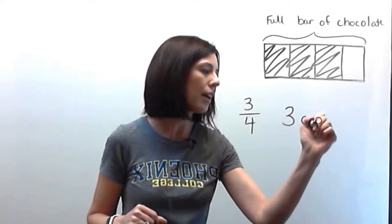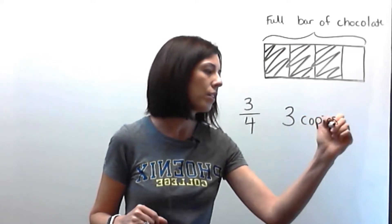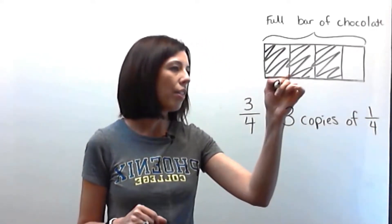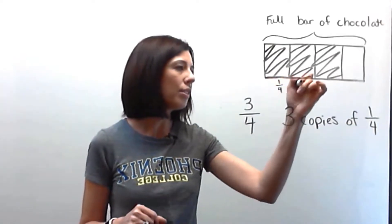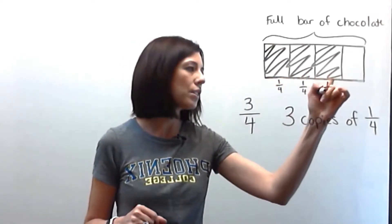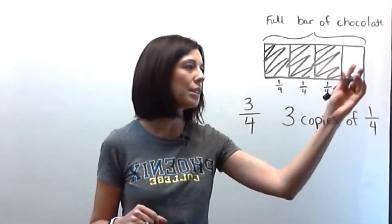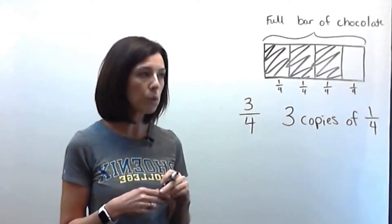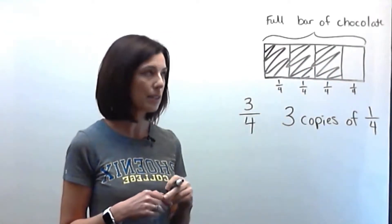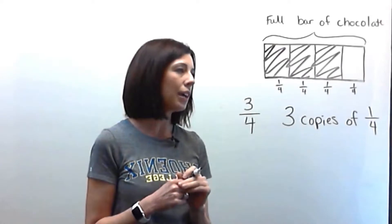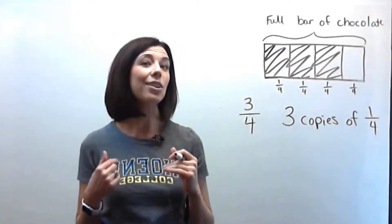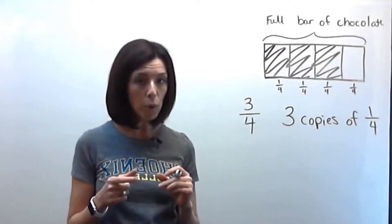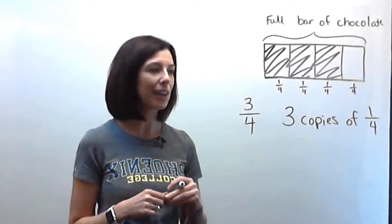that's three copies of one-fourth. So basically, this is a fourth, this is a fourth, this is a fourth, and this is a fourth, since my chocolate bar was cut into four equal pieces. Here's Jill's portion, and James was supposed to get a fourth of the full bar of chocolate.